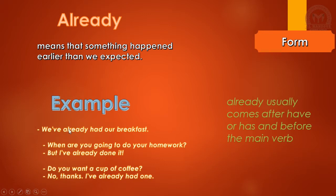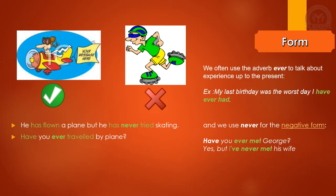Already usually comes after have or has. Like if you see here: have already, have already, have already, or has already, depends on the subject. Now we're going to talk about never and ever.